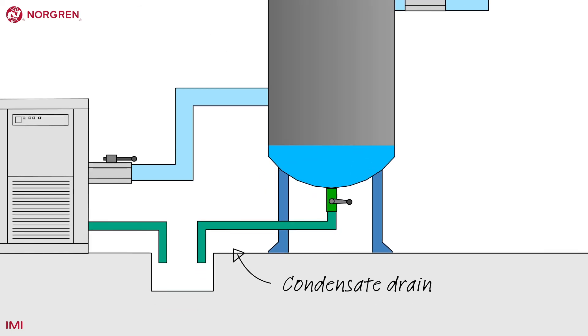The condensate drain allows that water to drain away. It may be a legal requirement in your country to dispose of this correctly as it could contain oil and other contaminants. The drain valve allows this drain to be switched on and off.